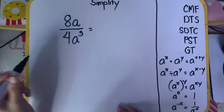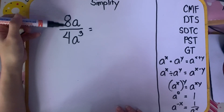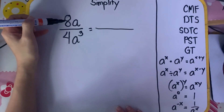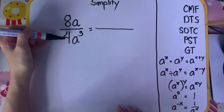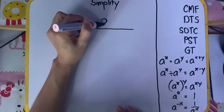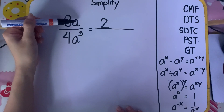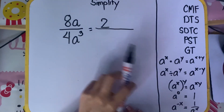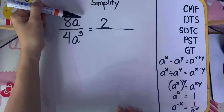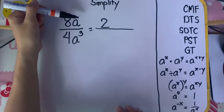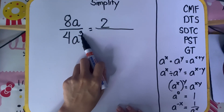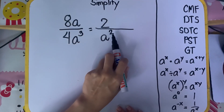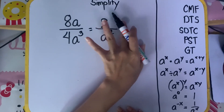Let us simplify 8a over 4a cubed. Simplify the constants or numerical coefficient first. Since the numerator is bigger than the denominator, divide: 8 divided by 4 equals 2, placed in the numerator. Next, divide the same variables. Subtract the exponents: 3 minus 1 equals 2. The bigger exponent is in the denominator, so place A squared in the denominator. Final answer is 2 over A squared.